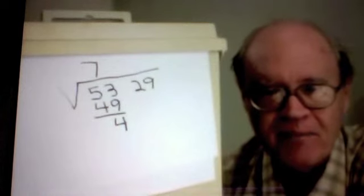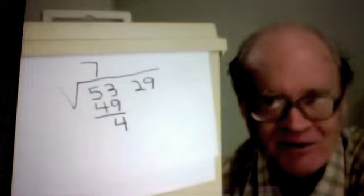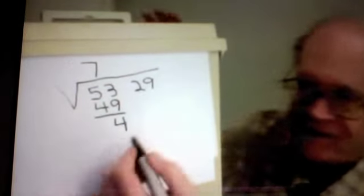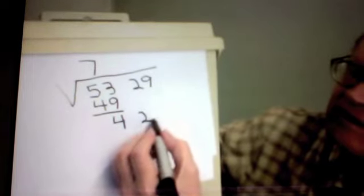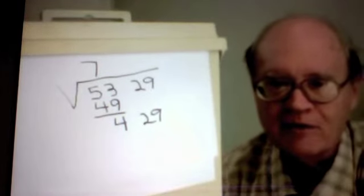You can see that this bears a resemblance to long division, except there is no divisor. Having subtracted and gotten 4, I bring down the 29. So now I have 429.